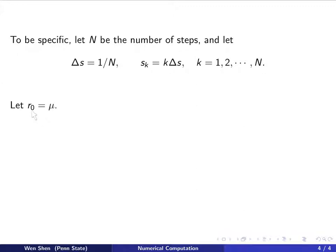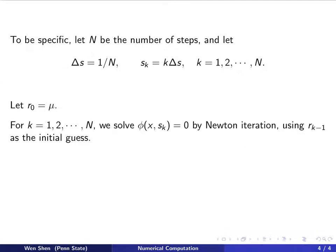Then, we choose r0 to be mu. After that, we go through an iteration for k from 1, 2, to N. And for each k, we solve phi of x, sk equals 0 by Newton iterations, and we use the root rk minus 1 as the initial guess.